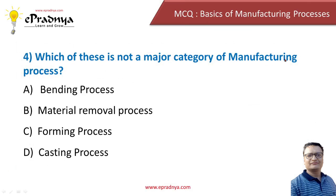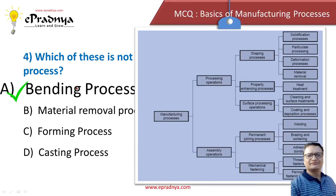Which of the following is NOT a major category of a manufacturing process? Options: bending process, material removal process, forming process, and casting process. The correct answer is bending process. Manufacturing processes are broadly classified into processing operations and assembly operations. Under shaping processes we have: solidification (casting), particulate process (powder metallurgy), deformation process (forming), and metal removal process. Bending is only a sub-category of the deformation or metal forming process.